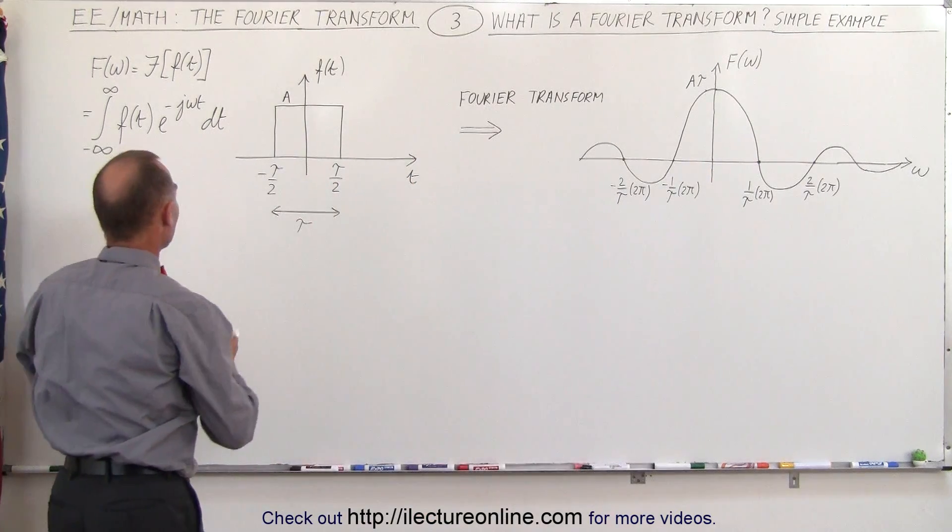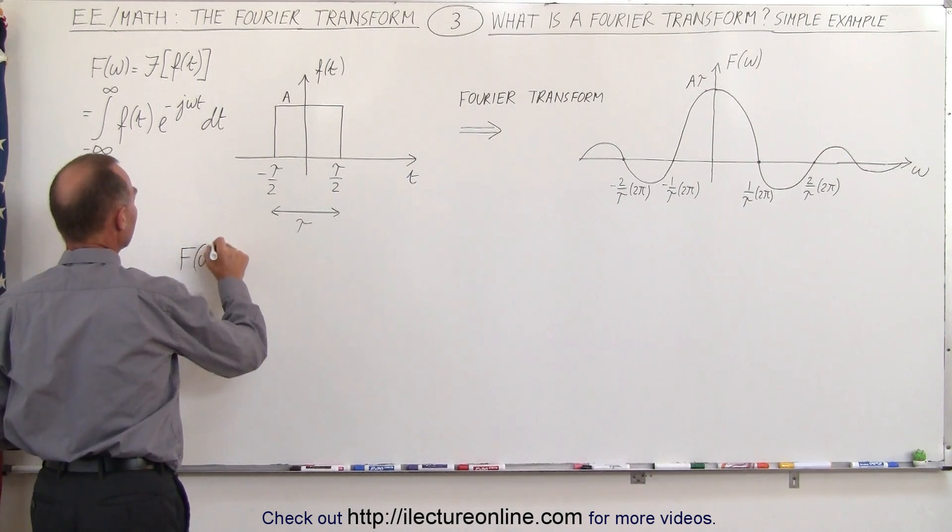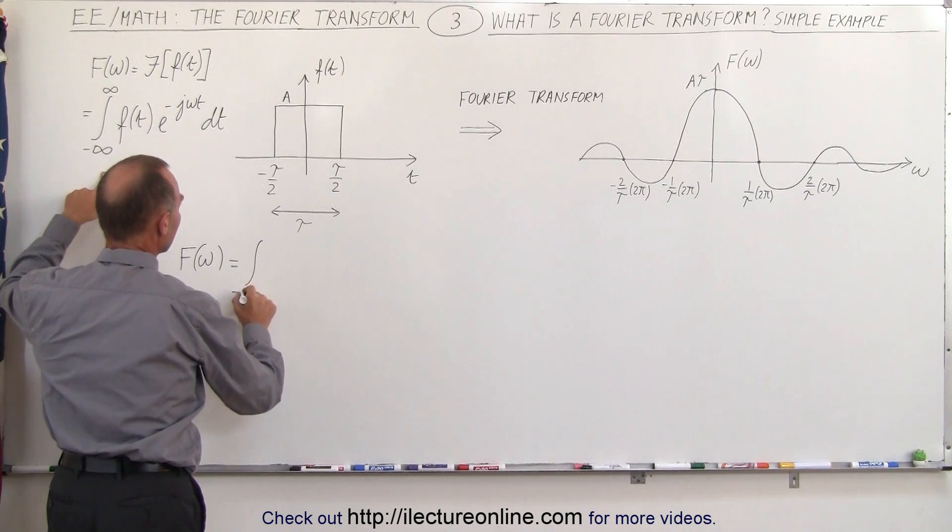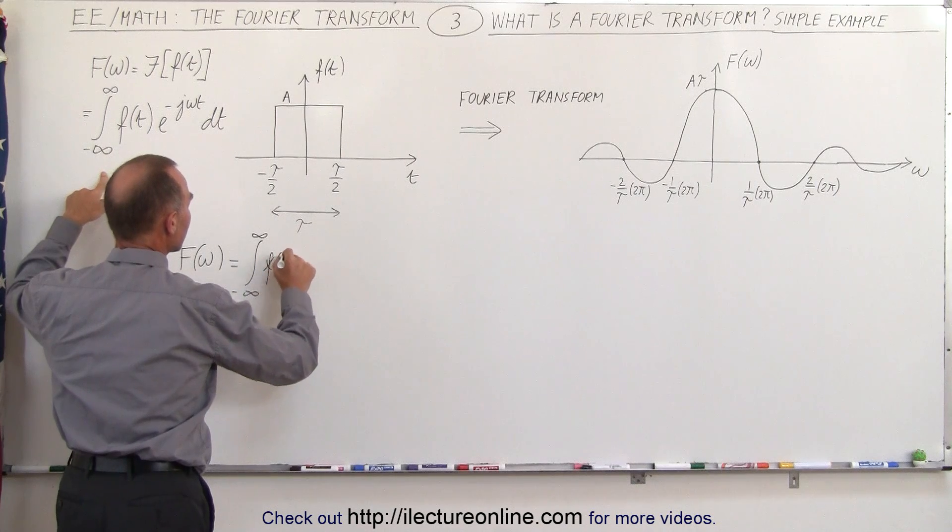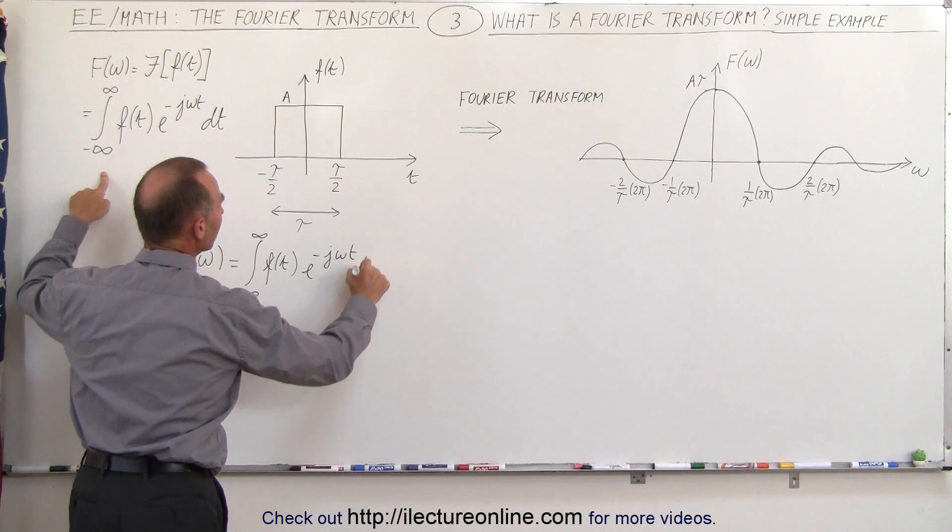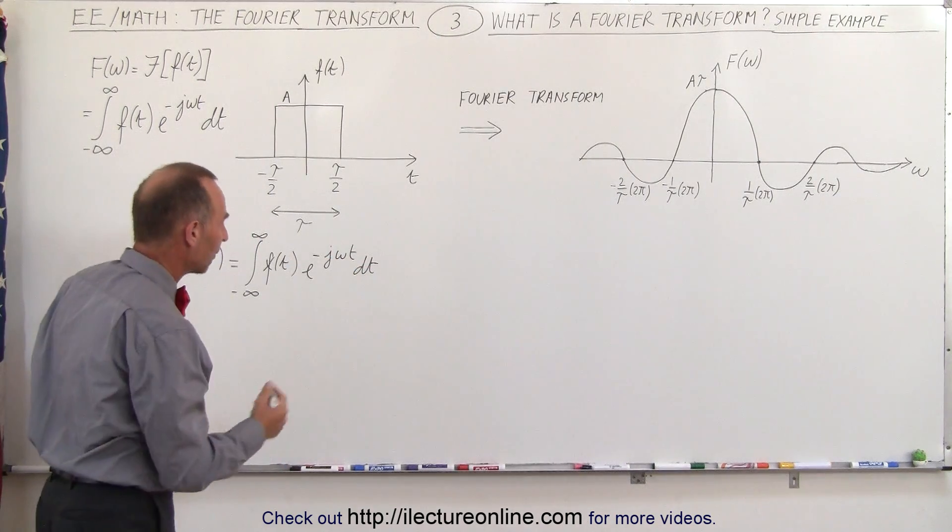So here we can say that the Fourier transform, the function in the frequency domain, is equal to the integral from minus infinity to infinity of the function f(t) multiplied times e to the minus j omega t dt. And remember that j is the square root of negative 1. It's in the complex domain.